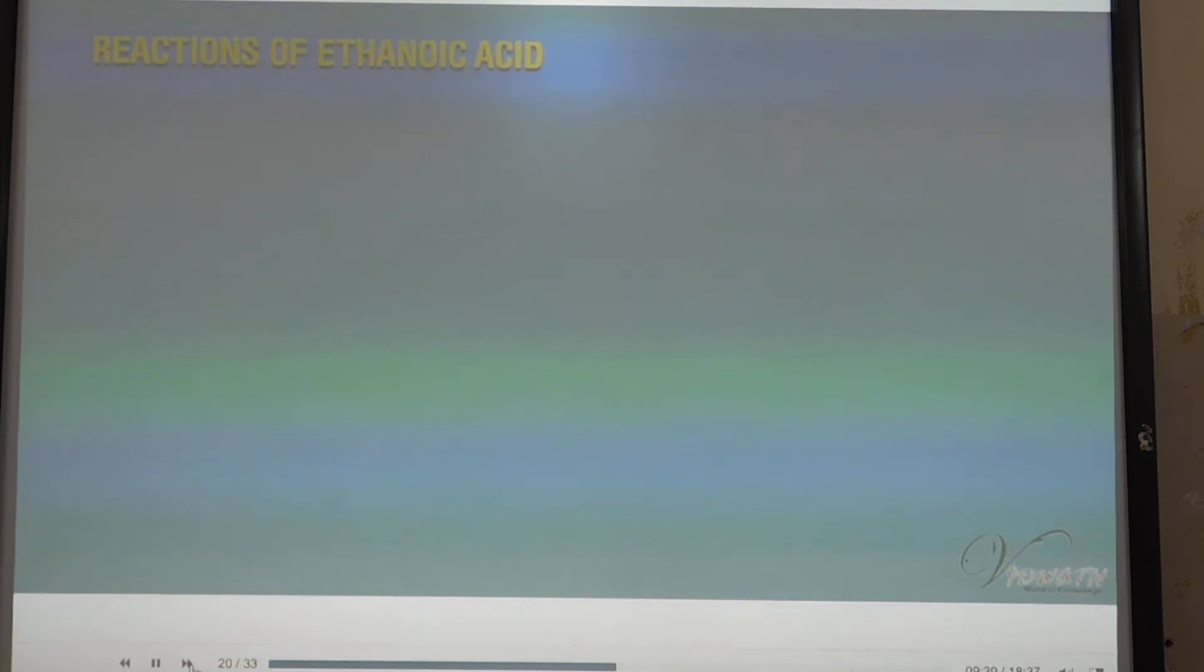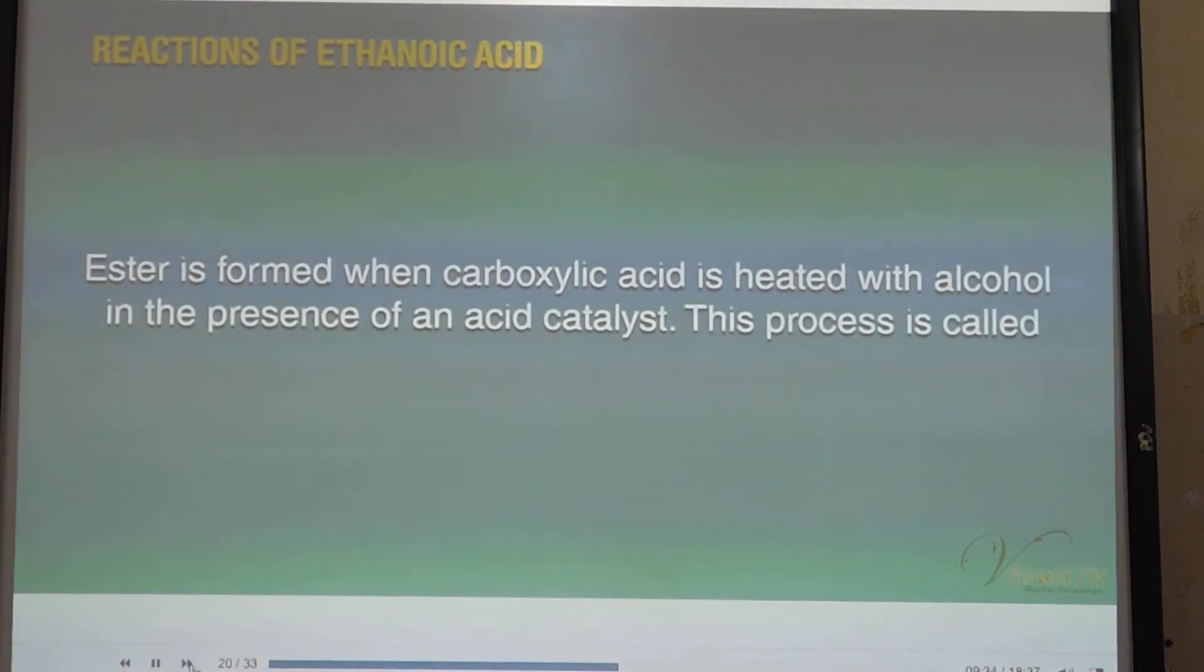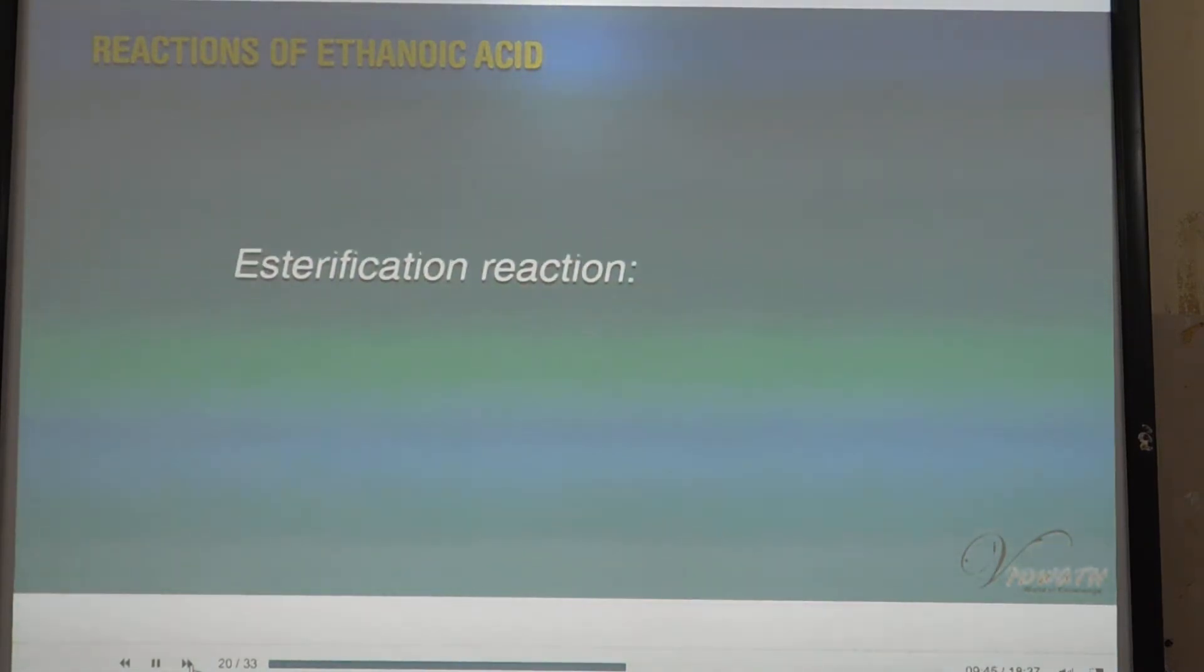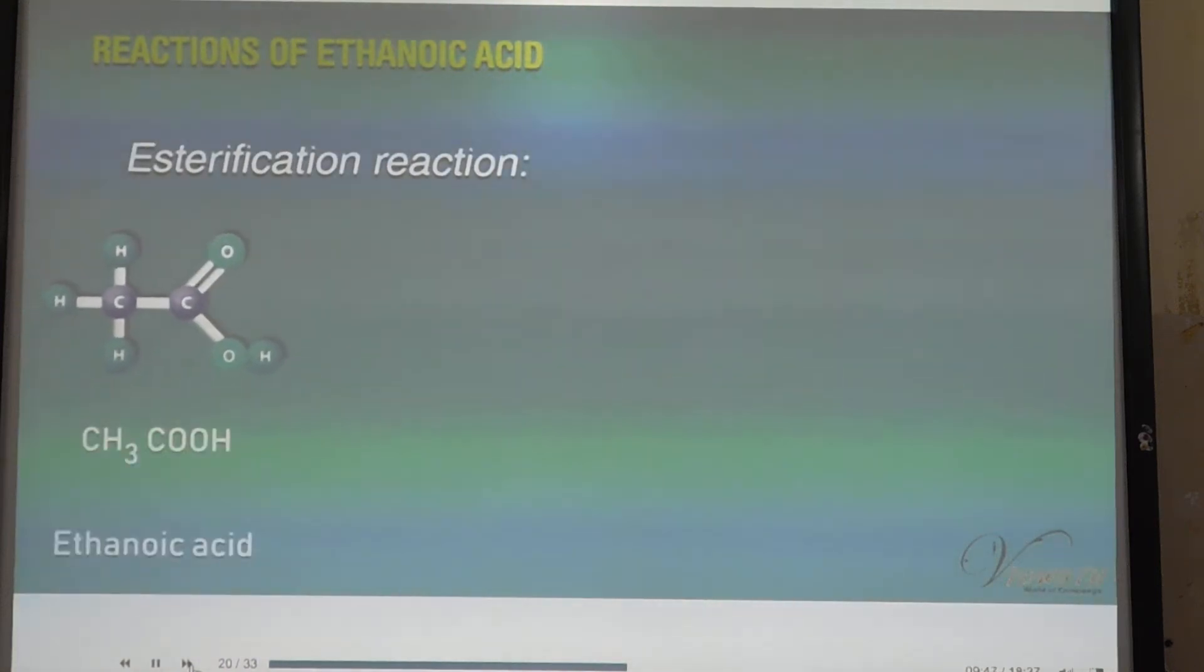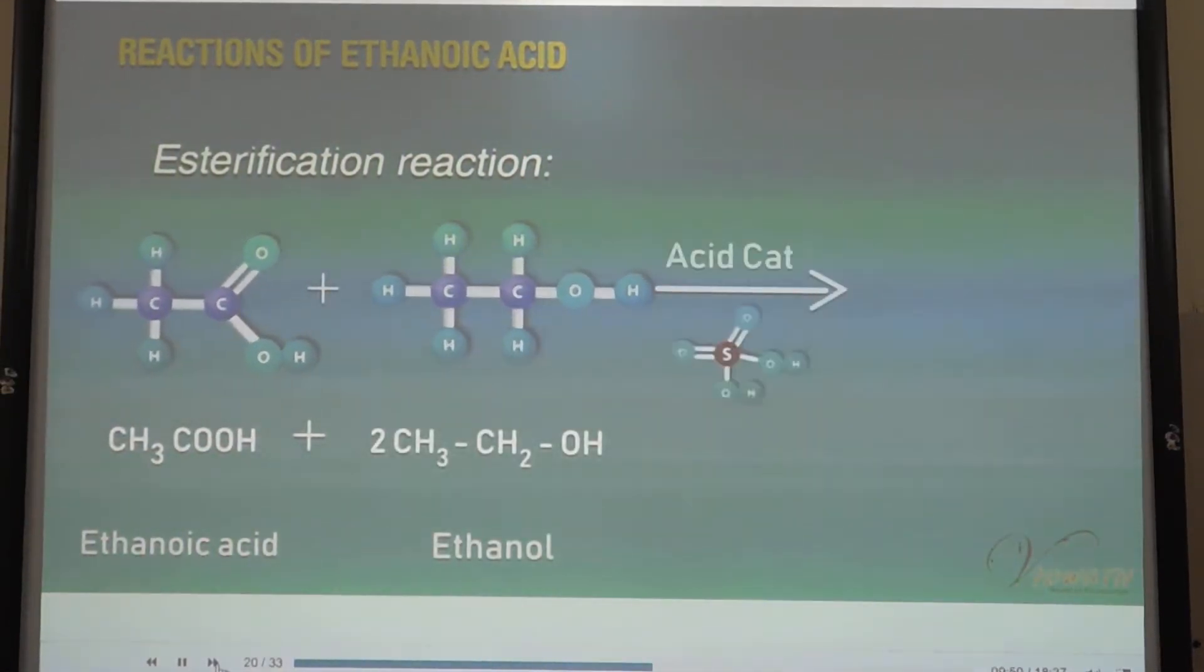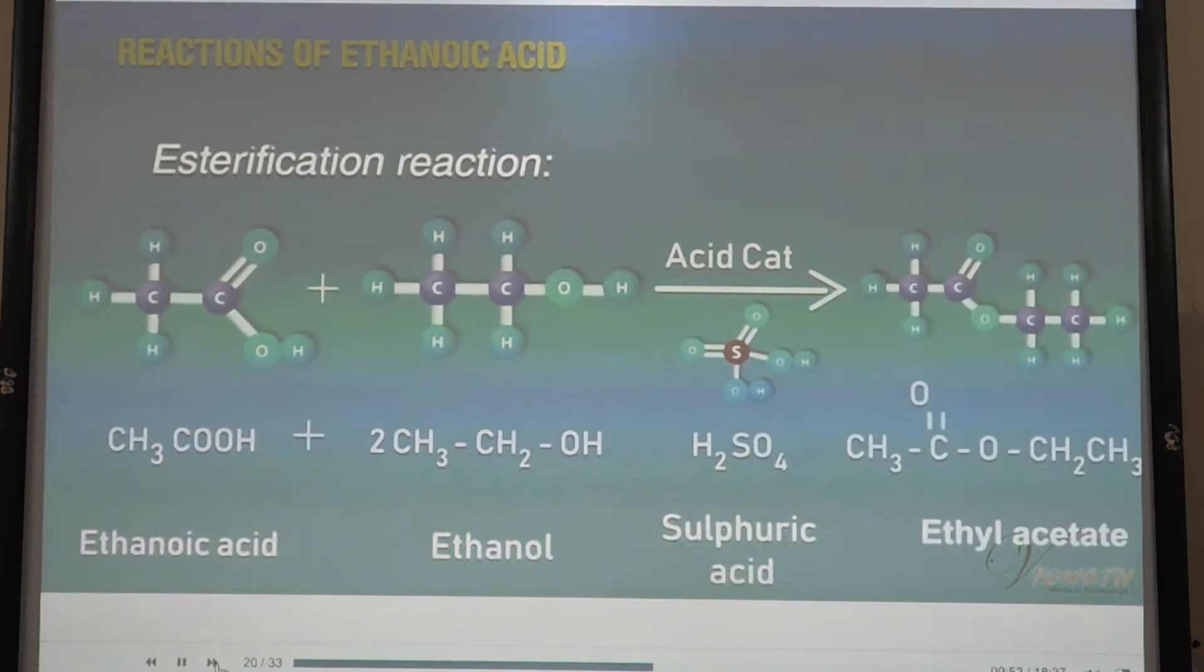Reactions of ethanoic acid: An ester is formed when carboxylic acid is heated with alcohol in the presence of an acid catalyst. This process is called esterification reaction. For example, when ethanoic acid is heated with ethanol in the presence of acid catalyst, it forms ethyl acetate.